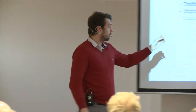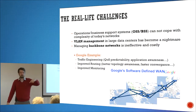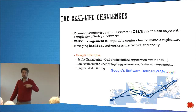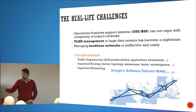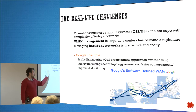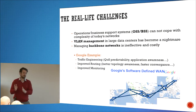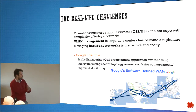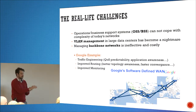Here's the Google example. Google uses SDN for traffic engineering, for improved routing and improved monitoring. Google wanted to have better topology awareness, faster convergence — if one link goes down, the traffic should go somewhere else with minimum downtime, minimum loss, and so on.